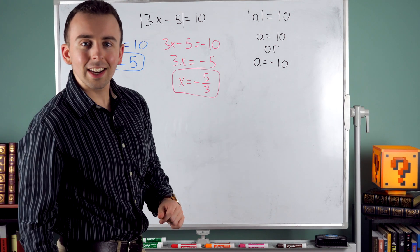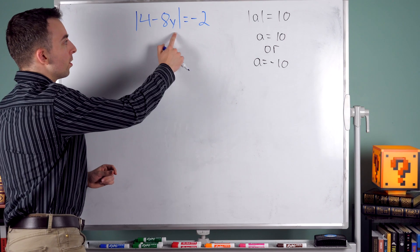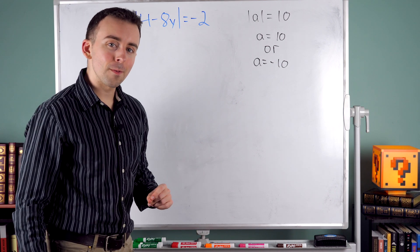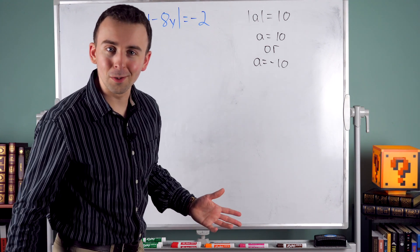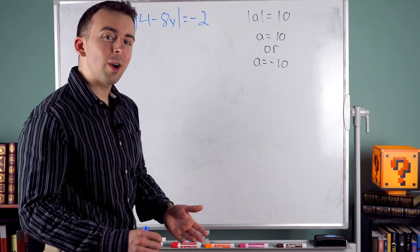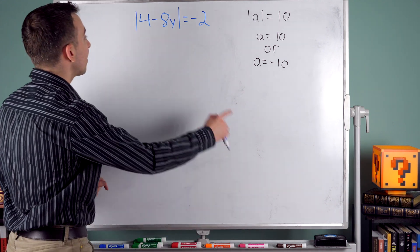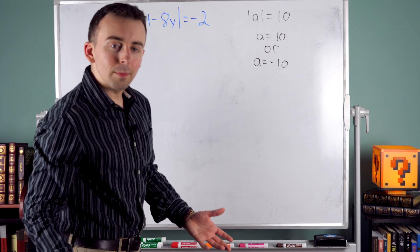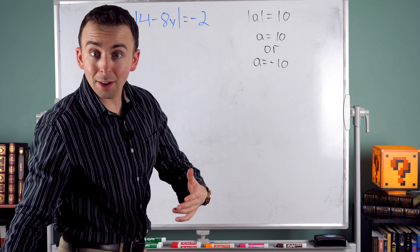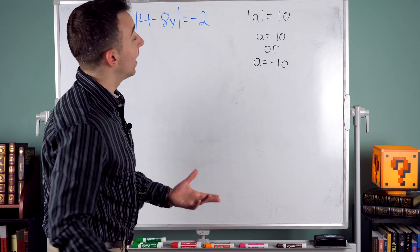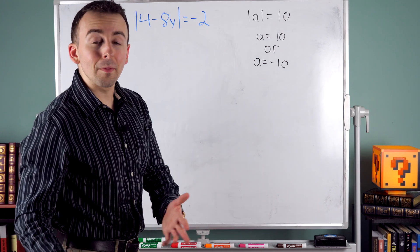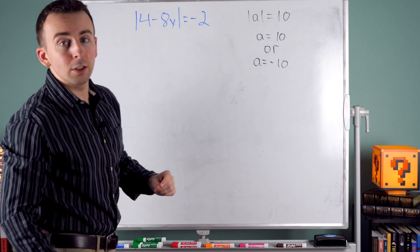Let's do another example. Here's a bit of a test: the absolute value of 4 minus 8y equals negative 2. What are the solutions? There are no solutions — why? The absolute value takes the input and spits out its magnitude or distance from zero: if it's negative, it makes it positive; if not, it doesn't change it. You're never going to get a negative output from an absolute value. The absolute value of something cannot be negative, so there are no solutions.